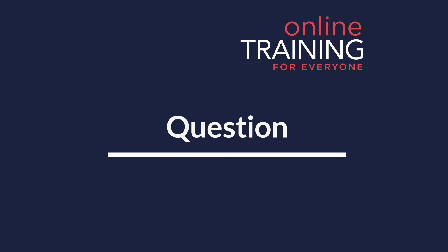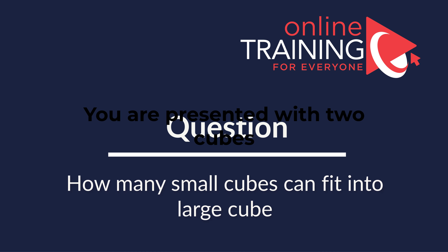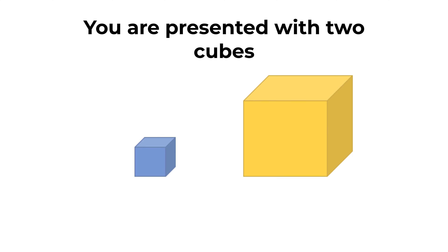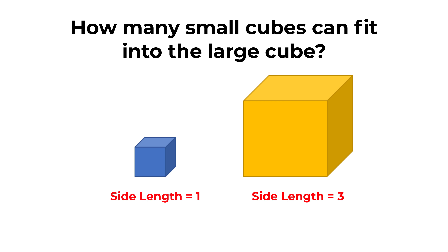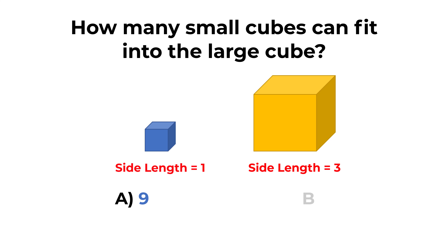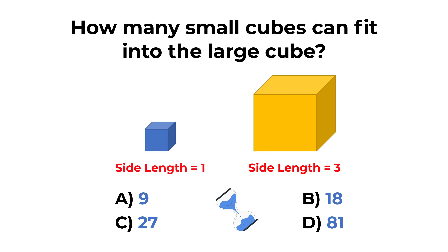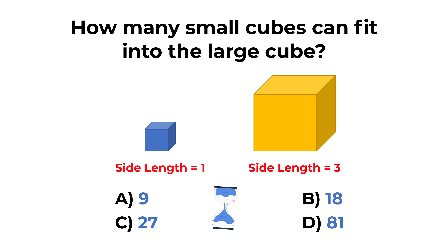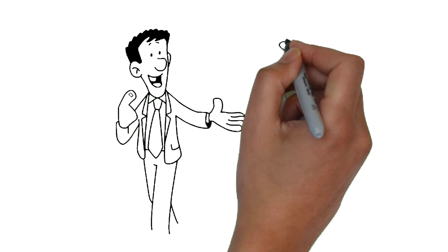Here's a cool question which you frequently see on the test. You're presented with 2 cubes. One cube has side length equal to 1 unit, and the second cube is a larger cube with side length equal to 3 units. The question is: how many small cubes can fit into the large cube? You have 4 different choices: Choice A 9, Choice B 18, Choice C 27, and Choice D 81. Give yourself 20 to 30 seconds — this is about as much time as you get in the real test. Let's go ahead and get to the correct solution together.